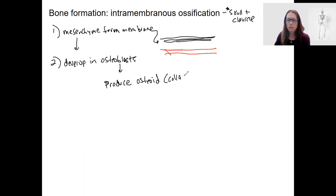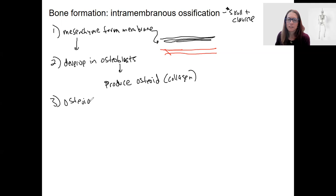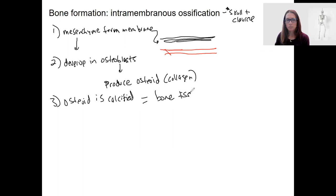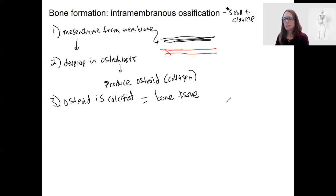Step three: the osteoid is calcified. The key point is that the osteoblasts are doing this. Now we've got bone tissue. What type of bone tissue? This is spongy bone — because of the density it is so far, forming all along the blood vessel.